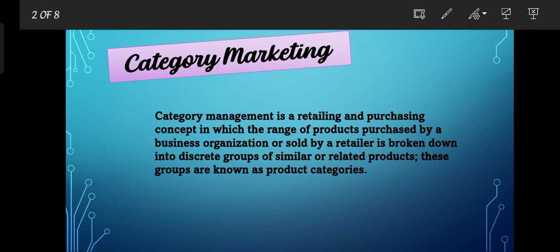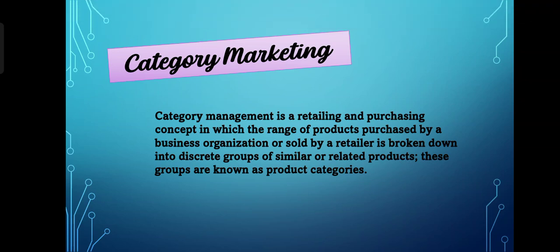Category Management is a retailing and purchasing concept in which the range of products purchased by a business organization or sold by a retailer is broken down into discrete groups of similar or related products. These groups are known as product categories. In other words, category management is a concept where products for sale or purchase are divided into sets so that consumers can easily find what they want to buy.